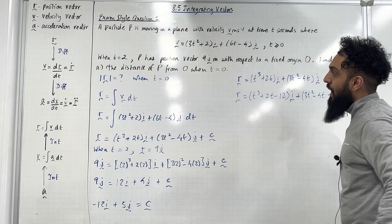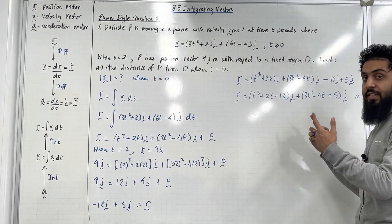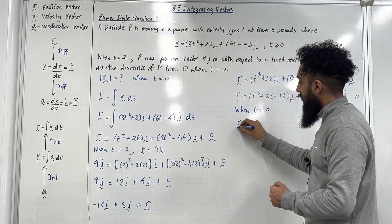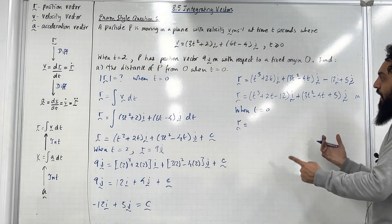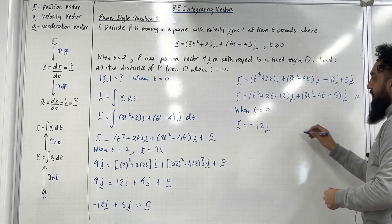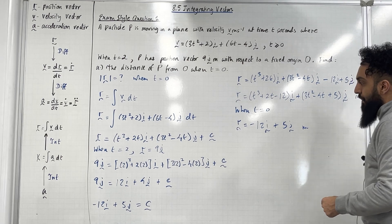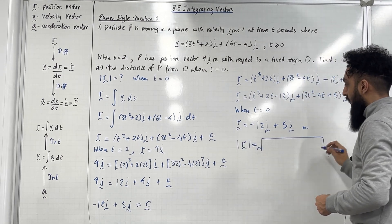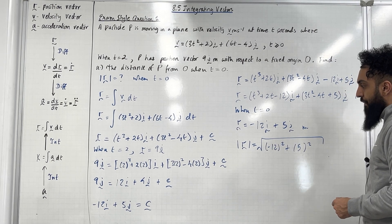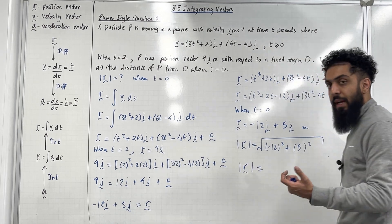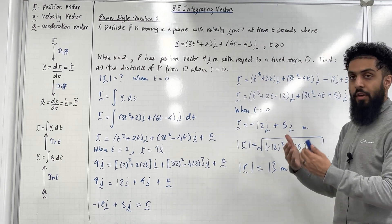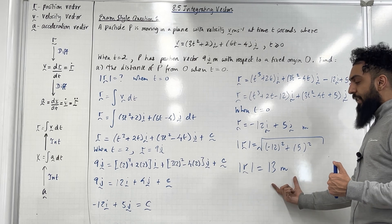This is the vector equation for the position vector subject to the condition that when T equals 2, the position vector of P is 9J meters. Now we substitute T equals 0 into the position vector equation, which gives minus 12I plus 5J meters. Taking the magnitude, square root of I component squared plus J component squared, gives precisely 13 meters. So the distance of P from O when T equals 0 is 13 meters.